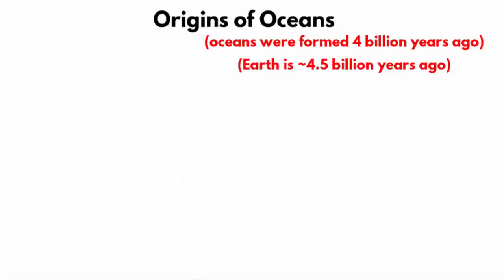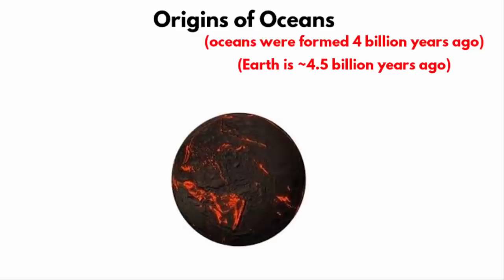We all know that the Earth was formed over 4.5 billion years ago. When the Earth was formed, it was a hot molten rock. There was no liquid water anywhere on Earth. But the ingredients that were required for water were there.